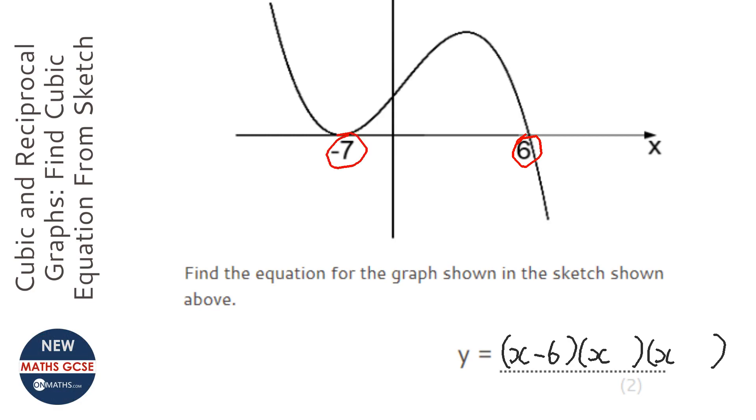And for this one here, it would be plus 7, because negative 7 take away 7 is a solution, right? Because it equals 0.